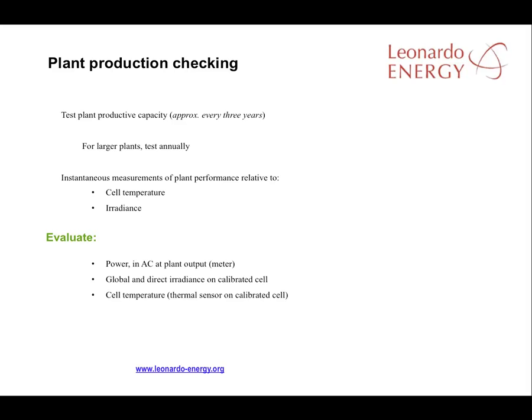The main aim of the plant production check is to maximize the productive capacity of the solar plant. This should be repeated every two years, or depending on the size of the facility it might be done more frequently. You can check the plant's production performance from the instant response to the solar temperature and the radiance.